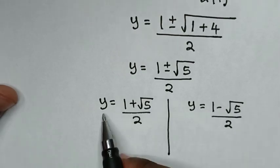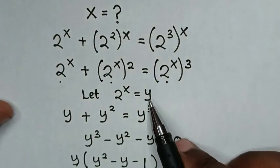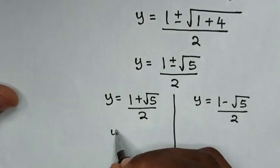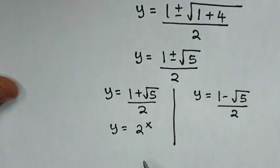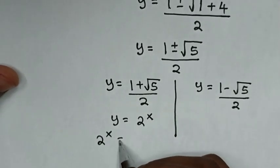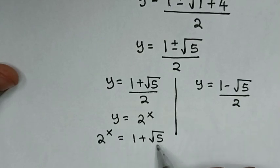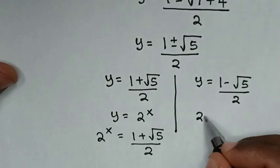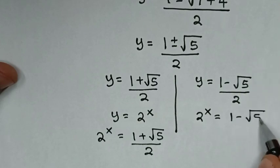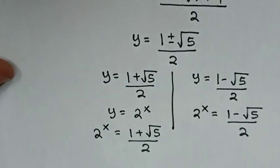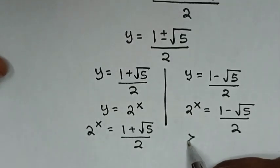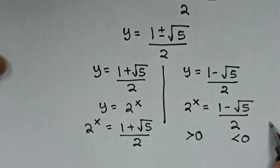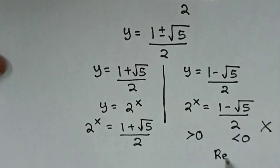We substitute the values of y back, recalling that y equals 2 power x. So 2 power x equals 1 plus square root of 5 over 2, or 2 power x equals 1 minus square root of 5 over 2. Since 2 to any power is greater than 0, and the second right-hand side is less than 0, that solution is not possible and is rejected.